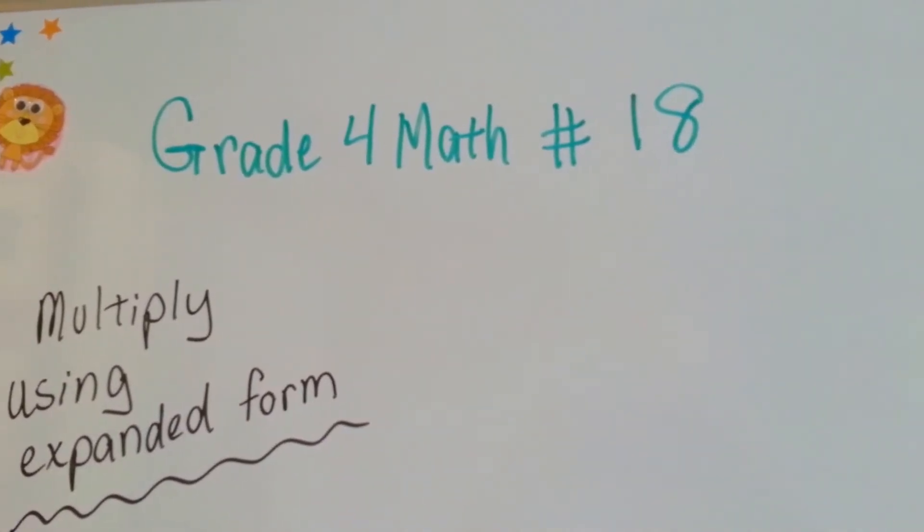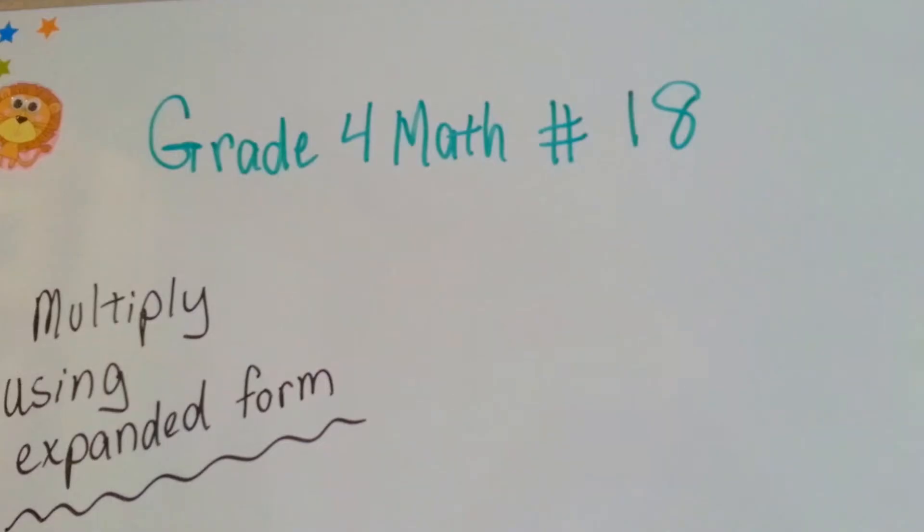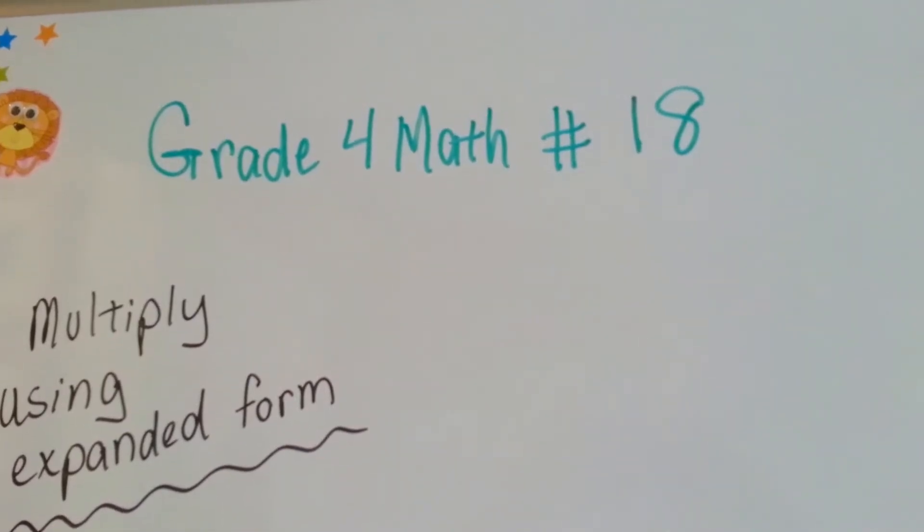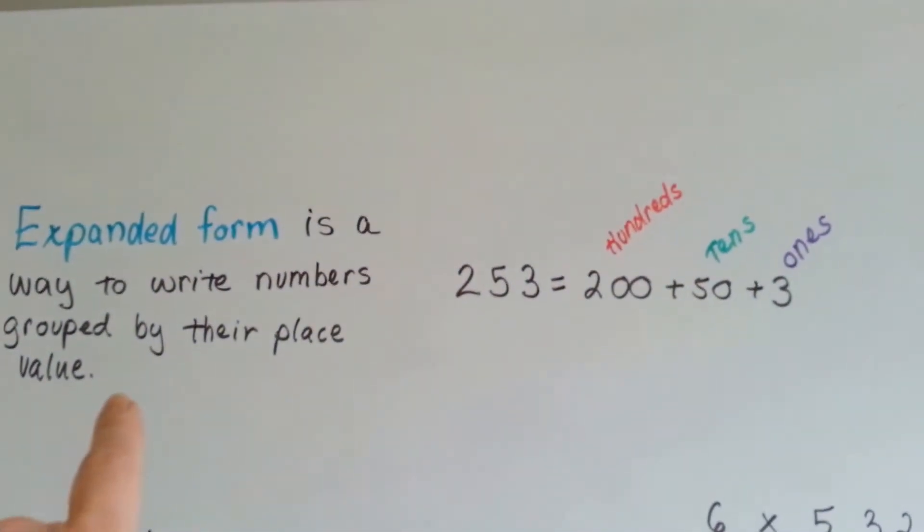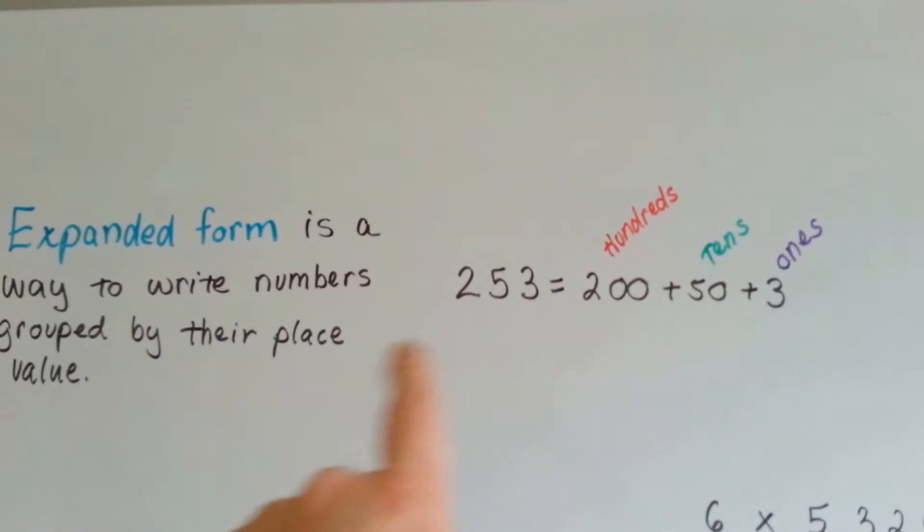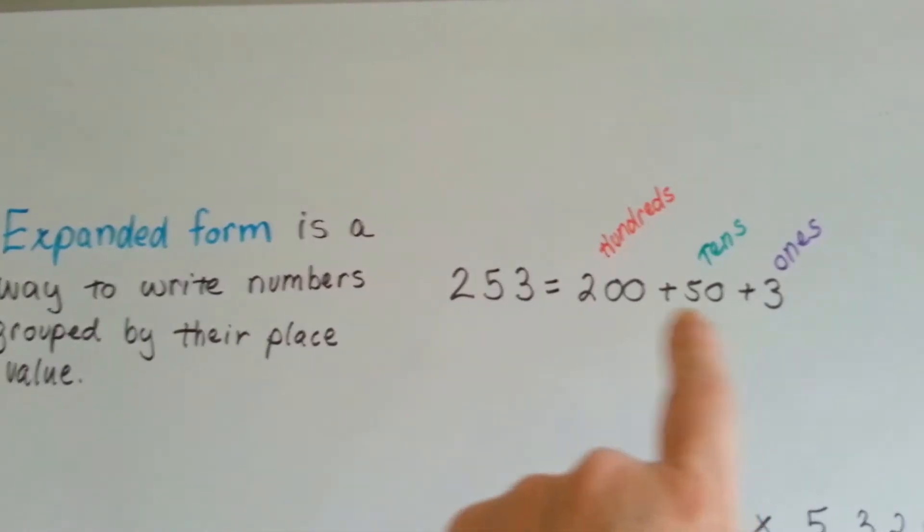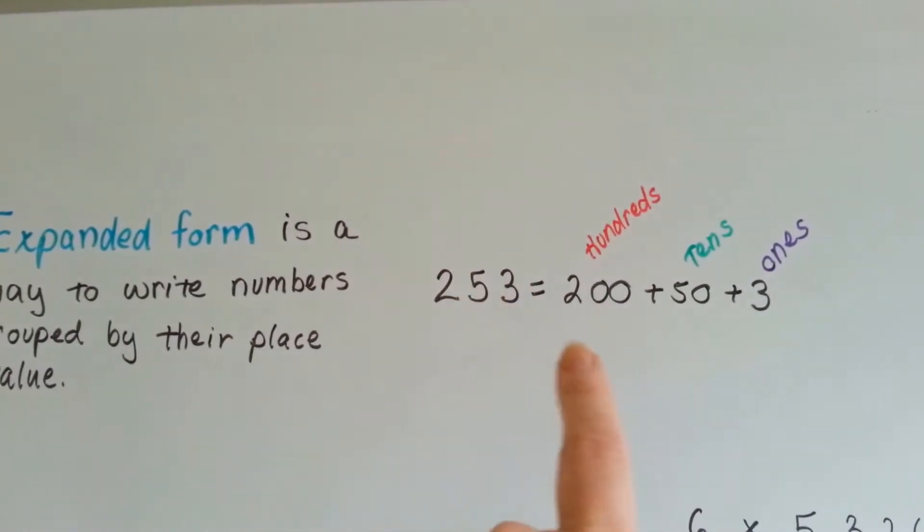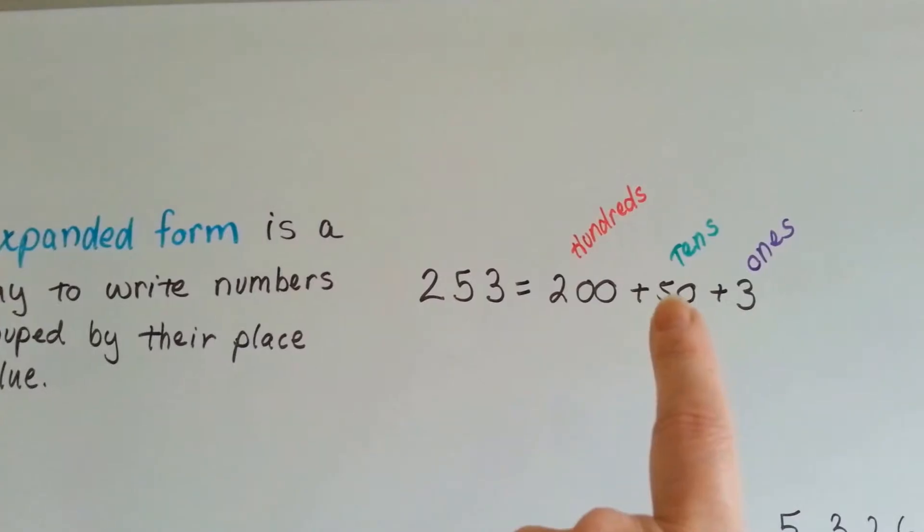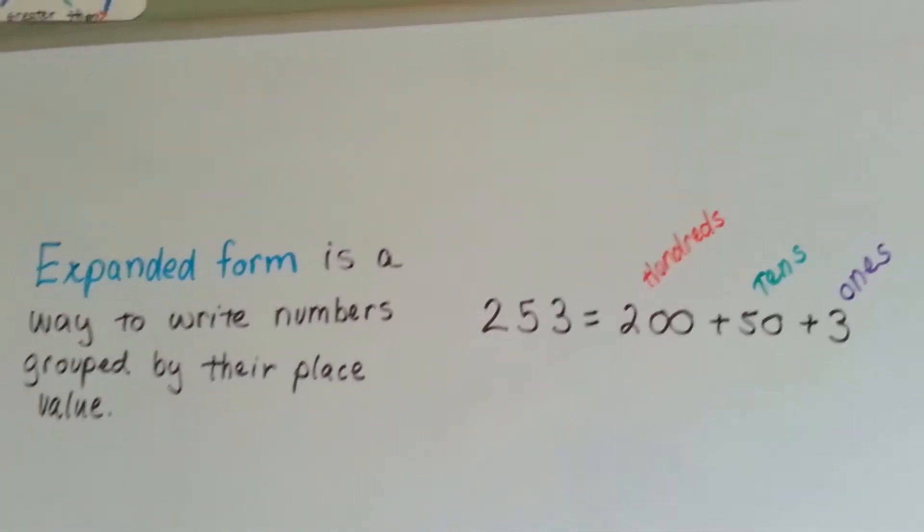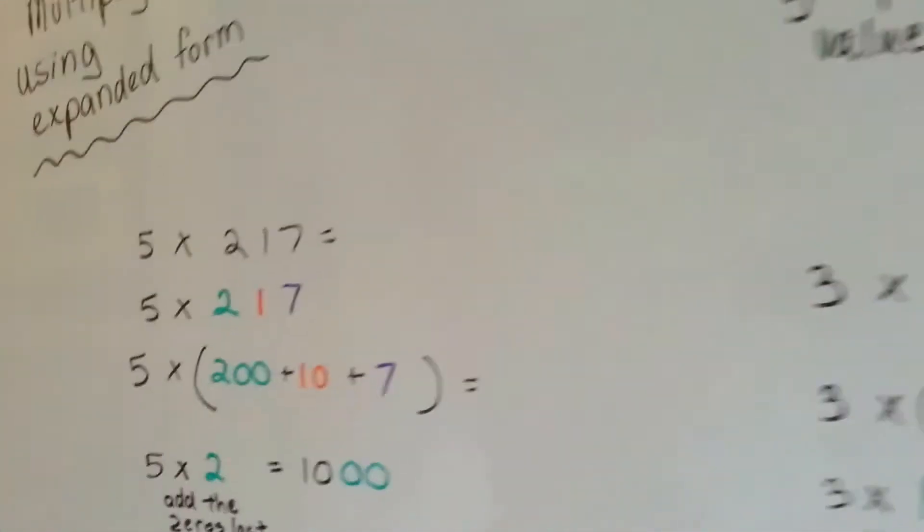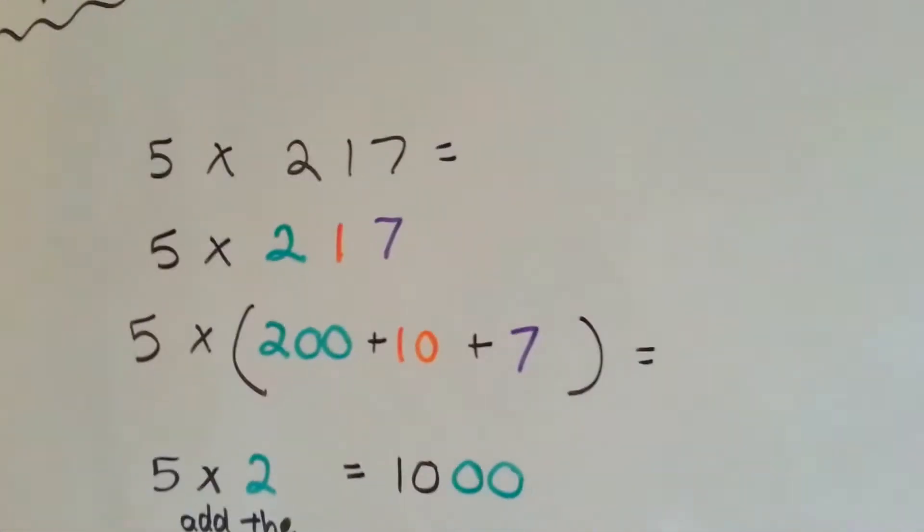Great for math number 18. Multiply using expanded form. Remember, expanded form is a way to write numbers grouped by their place value. It's all broken up. 253 is two hundreds, fifty, and three, right? So you can multiply this way. It's a way of getting partial products like we did in the last video.